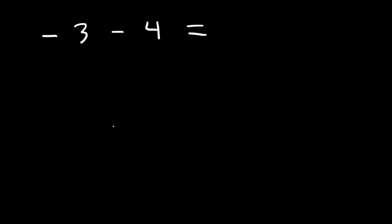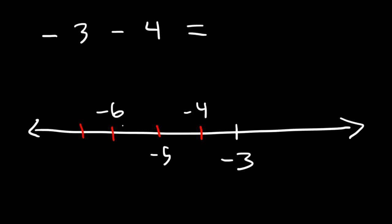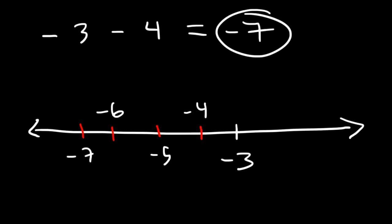Try this: negative 3 minus 4. Starting with negative 3, we need to move four units to the left: 1, 2, 3, 4. So this is negative 4, negative 5, negative 6, and negative 7. So negative 3 minus 4 is negative 7.